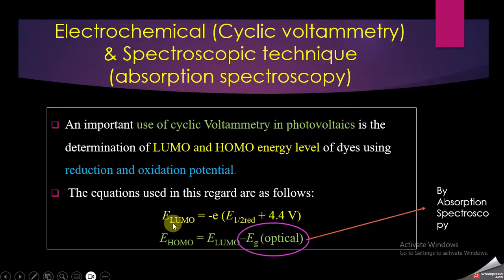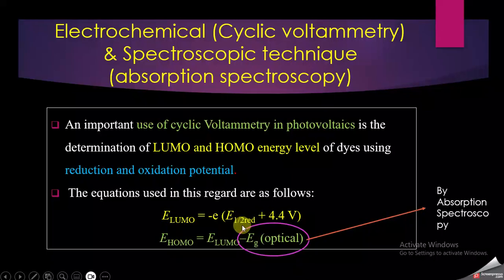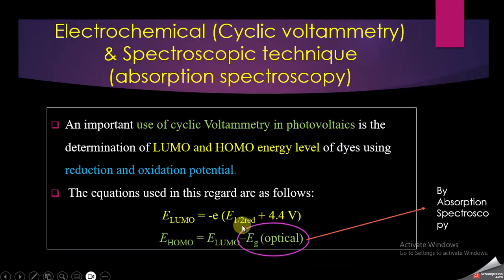E_LUMO is related to the half-wave reduction potential because it's the lowest unoccupied molecular orbital where electrons are added to reduce a molecule. The second formula is E_HOMO equals E_LUMO minus E_gap. This is simple because the band gap of material is the difference between the highest occupied molecular orbital and the lowest unoccupied molecular orbital.